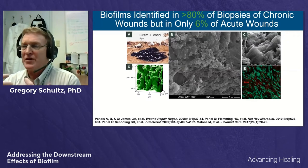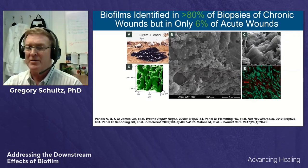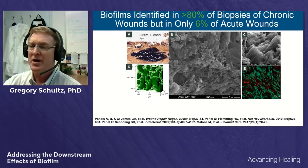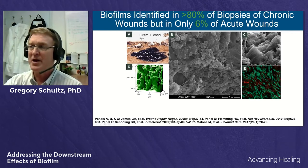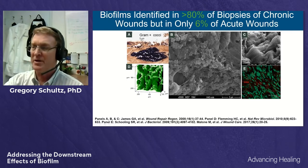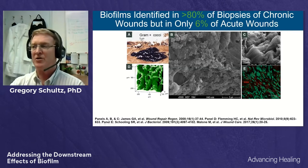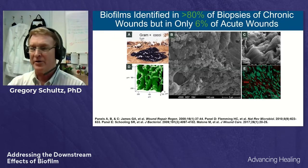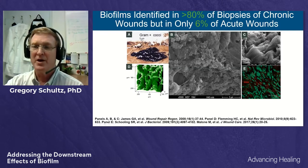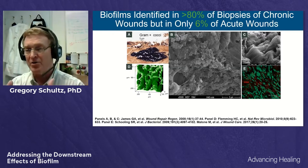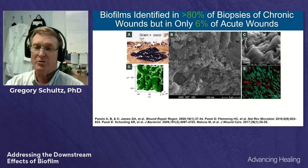As the field matured, key papers identified biofilms in about 80% of chronic wound biopsies, but only in a very small percent of acute wounds. A scanning electron micrograph shows what a typical large mature bacterial biofilm looks like on the surface of a wound bed. Importantly, biofilms are not just on the surface — they can also be found under the surface of the wound bed, sometimes up to almost a millimeter deep.